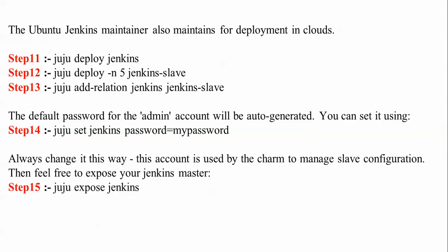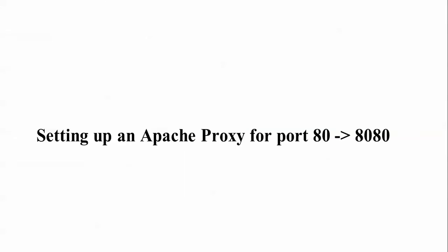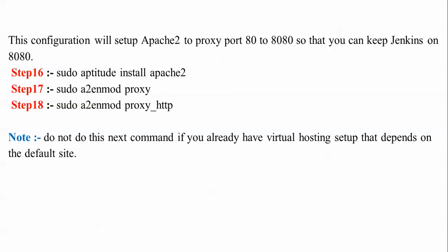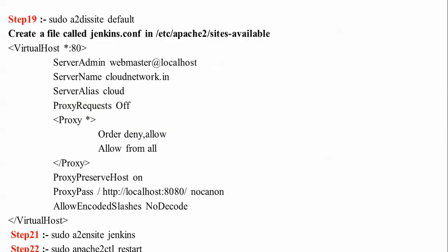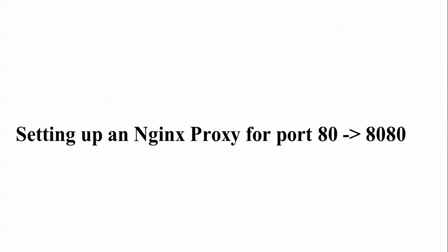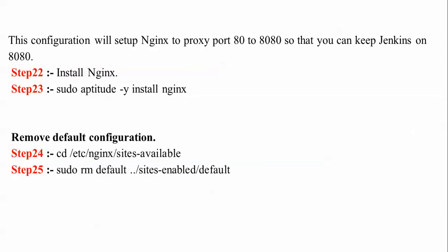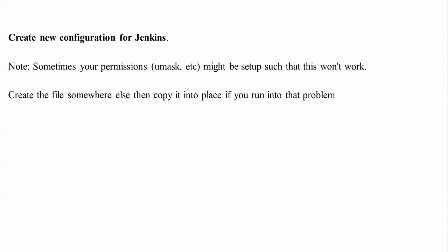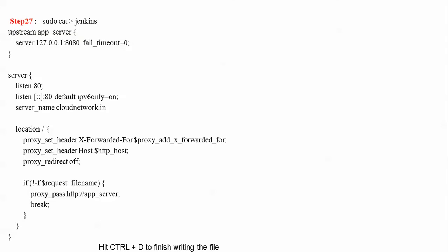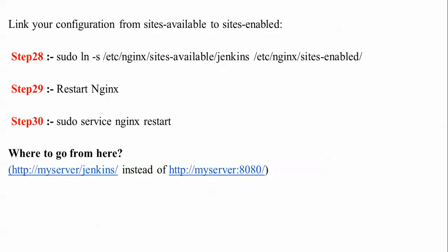You can see Jenkins is running and ready to deploy. For deployment, follow the command steps up to step 15. If you want to set up a proxy on port 80, follow steps 16, 17, and 18. Open the configuration file and copy-paste the provided configuration, replacing the domain name, email ID, and port number. Save the file, then install Apache and restart it. For nginx proxy setup, use the default configuration, copy-paste it into the Jenkins config, save with Ctrl+X, then restart nginx. Access Jenkins at your-server/jenkins or with the port number.